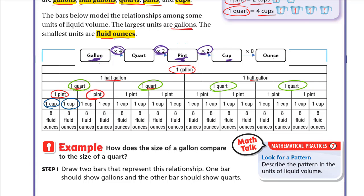From gallon to ounce, multiply four by two by two by eight: four times two is eight, times two is sixteen, times eight is 128. So one gallon is 128 ounces. From quart to cup, multiply two by two by two — that's four — so one quart is four cups.